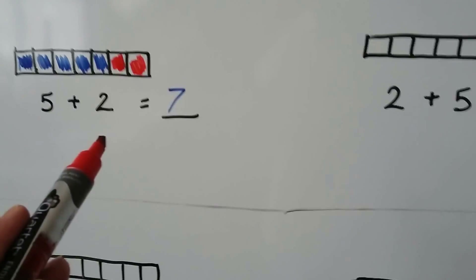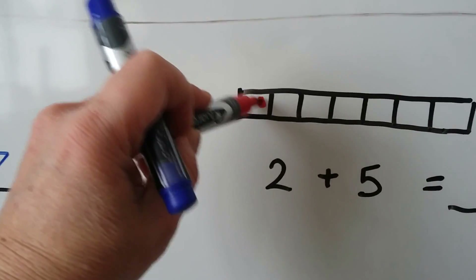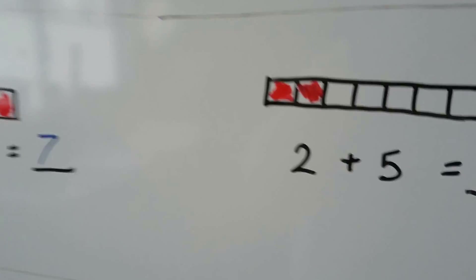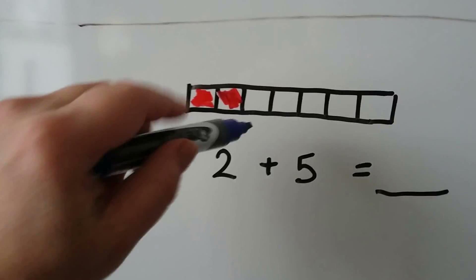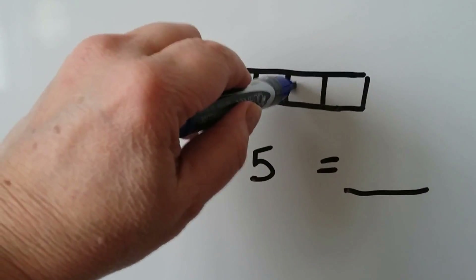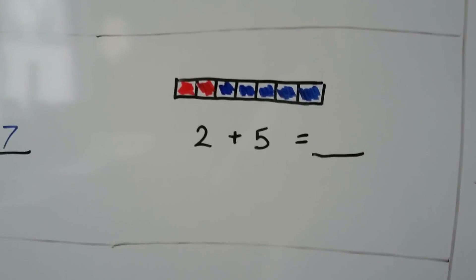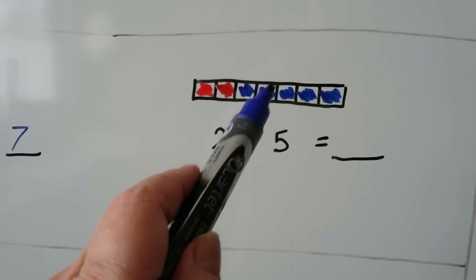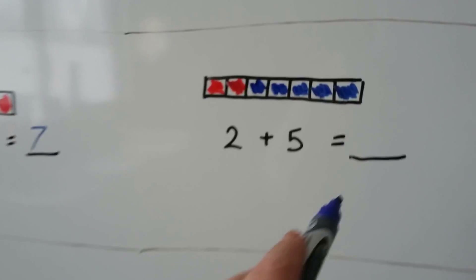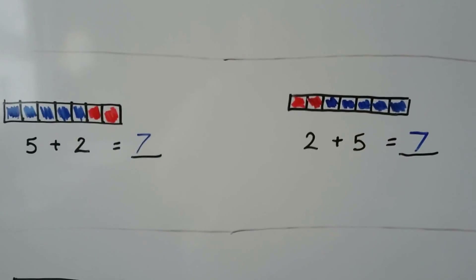If we change the order and put two red ones and then five blue ones, how many squares do we have colored in? 1, 2, 3, 4, 5, 6, 7. We have 7. It's the same amount — it's the same sum. It didn't matter what order the addends were in.